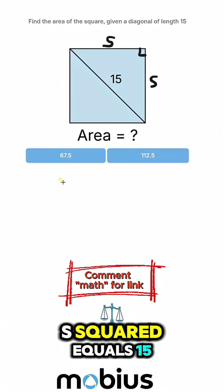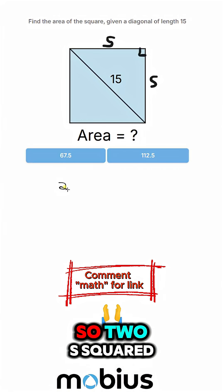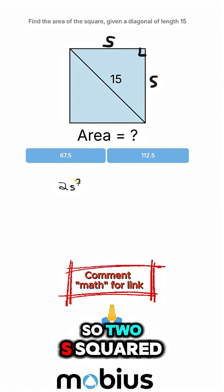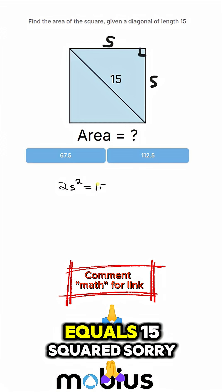S squared plus another S squared equals 15 squared. So 2S squared equals 15 squared.